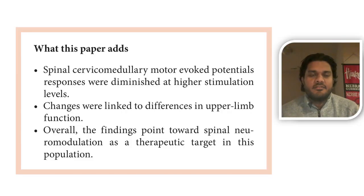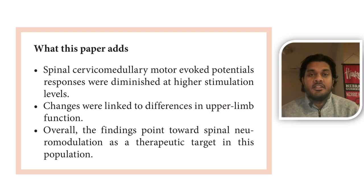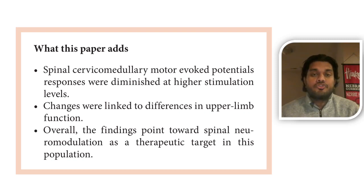So, what did we observe from the study? We saw that the spinal C-MEP responses were diminished at higher stimulation levels in adults with cerebral palsy. That is, when we increased the intensity of the electrical stimulation to activate these pathways in adults with cerebral palsy, we observed that those responses were diminished, suggesting that these pathways at higher stimulation intensities or higher activation levels are affected in adults with cerebral palsy. We also observed that these changes were linked to differences in upper limb function, such that those individuals with greater amounts of impairment, both in terms of manual dexterity and selective motor control, also had the most diminished responses in connecting the brain with the spinal cord.